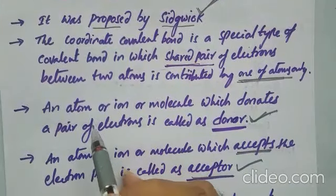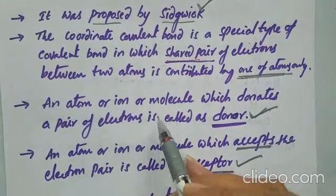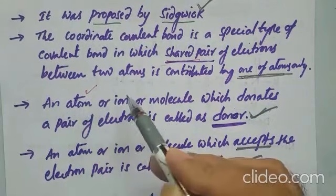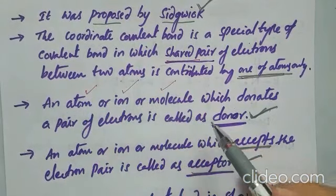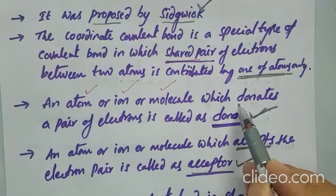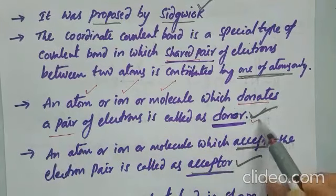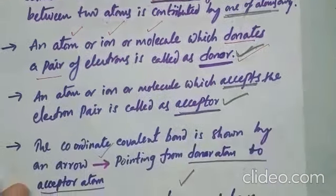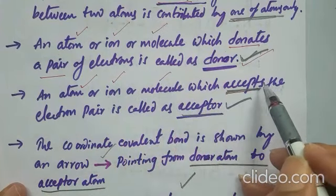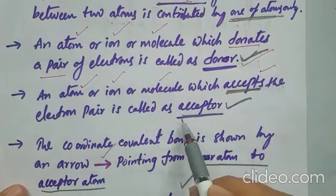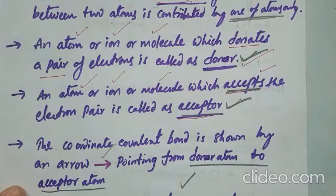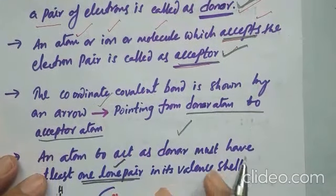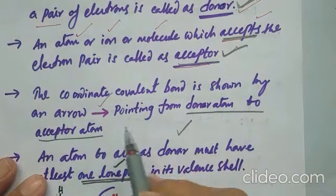An atom, ion, or molecule which donates a pair of electrons is called donor. Similarly, an atom, ion, or molecule which accepts the electron pair is called acceptor.